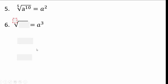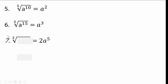Here's another one: index and radicand are missing, and the answer is a to the third. If I pick the index to be 5, the radicand should be a to the 15th, since 15 fifths is 3. If the index is given, you have one possible answer. For cube root to give a to the 5th: something over 3 equals 5, so that's 15 — a to the 15th, since 15 thirds is 5.